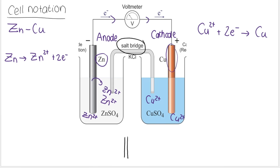When we draw a cell notation, we always include the things going on in the anode on the left-hand side, and everything going on in the cathode on the right-hand side. Your solids — what your electrodes are made up of — are always on the outside of your cell notation.